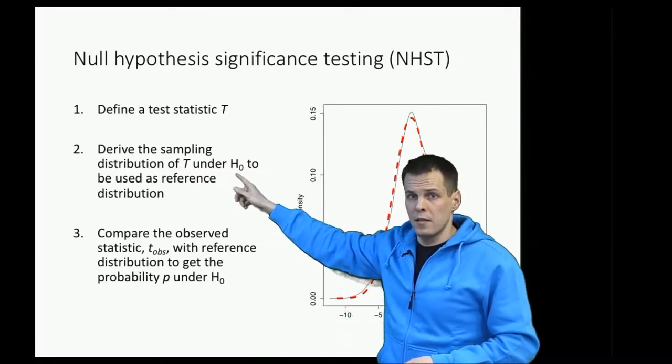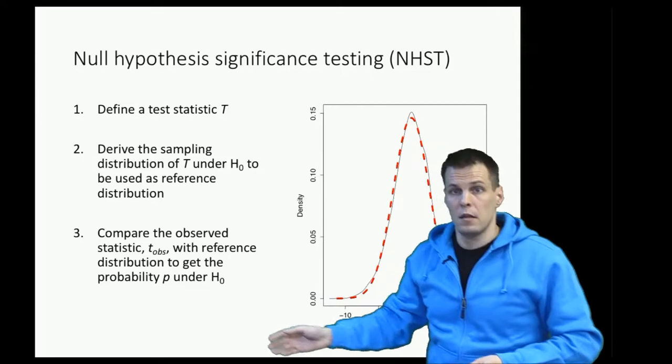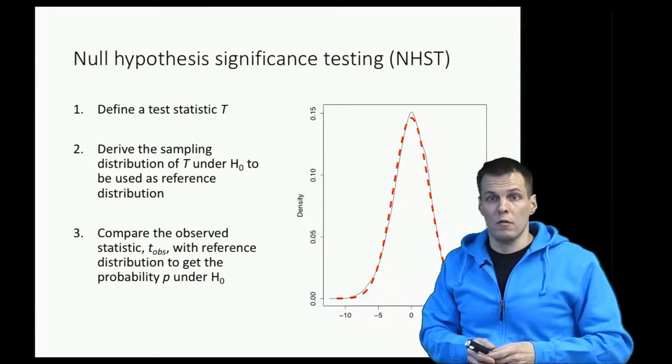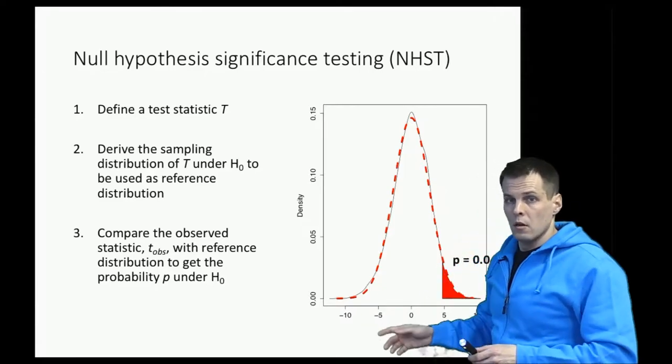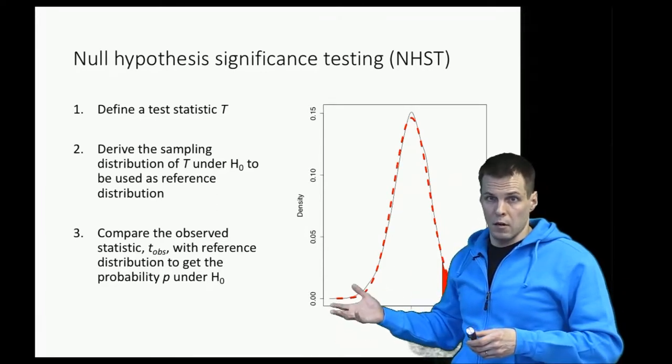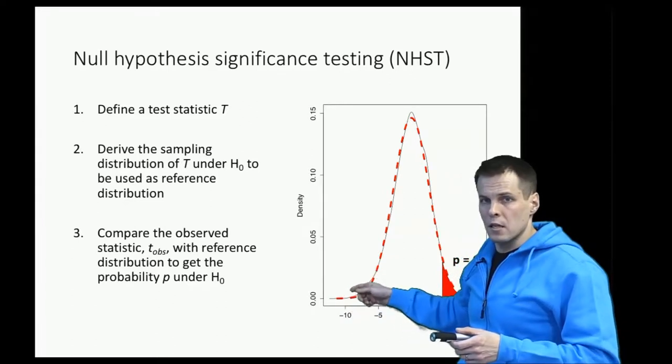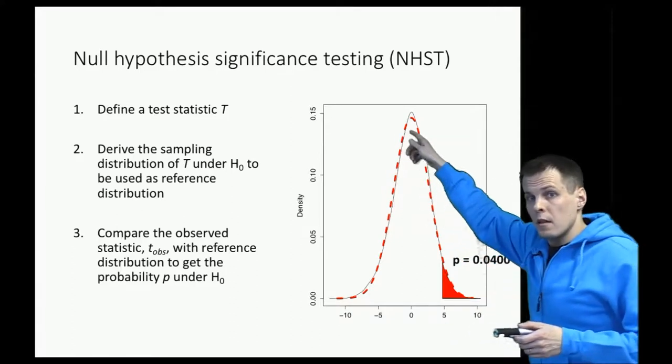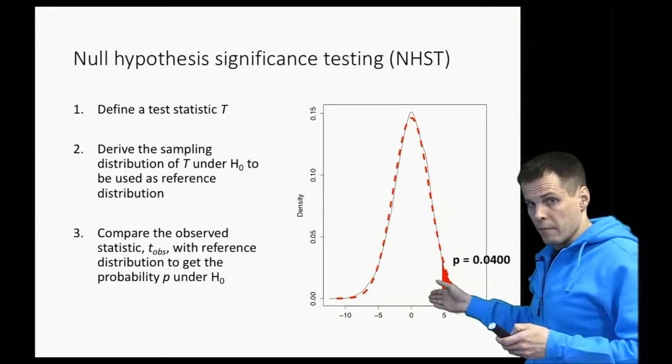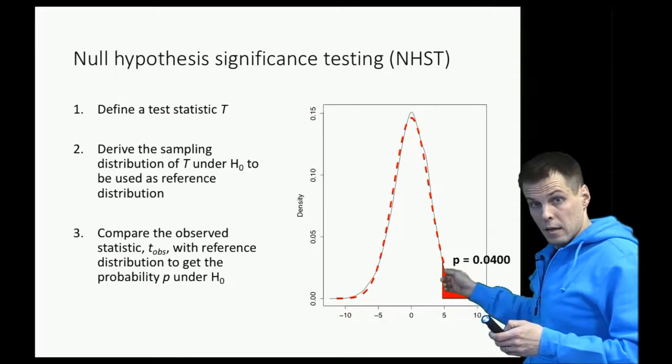The null hypothesis, or H0, is typically a hypothesis that there is no effect—there is no correlation between CEO gender and profitability, or no difference between men and women-led companies on profitability. Then we derive, based on statistical theory, a reference distribution: how would the test statistic be distributed if there was really no effect? We compare the test statistic calculated from our sample to the distribution, and this area here gives us the p-value.